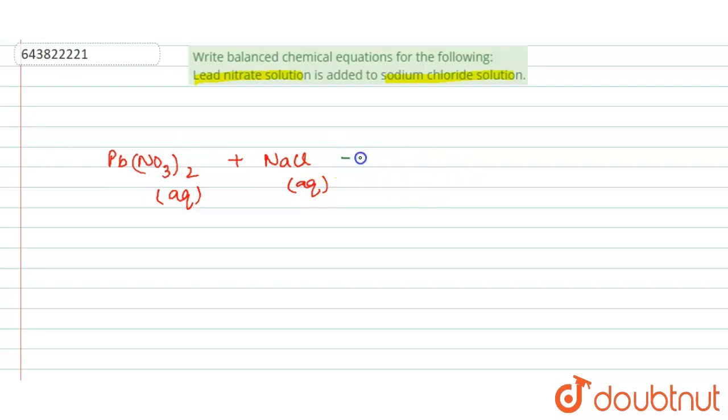The product of this reaction is NaNO3 which is known as sodium nitrate plus PbCl2 which is known as lead chloride and these two are also in aqueous states.